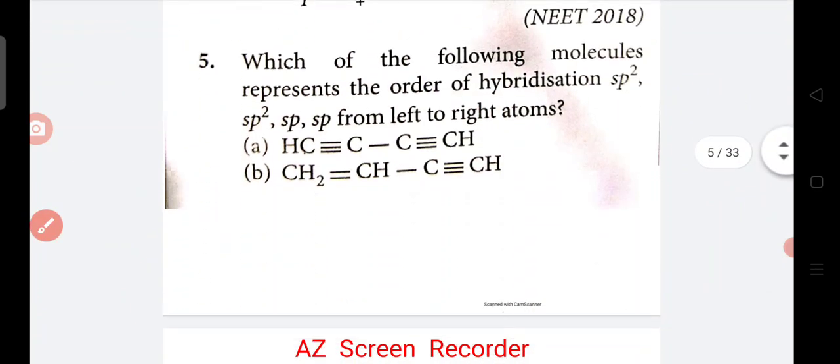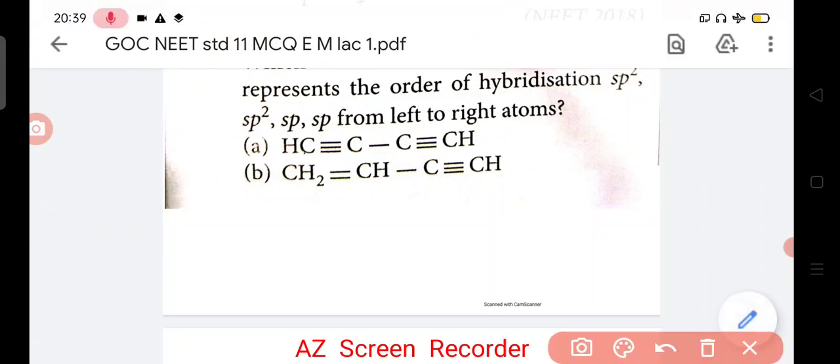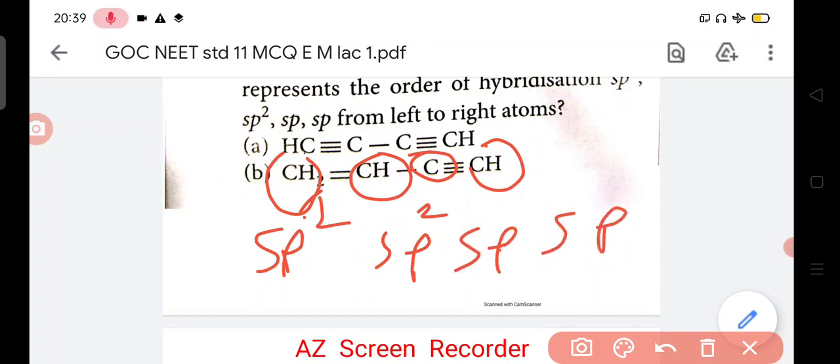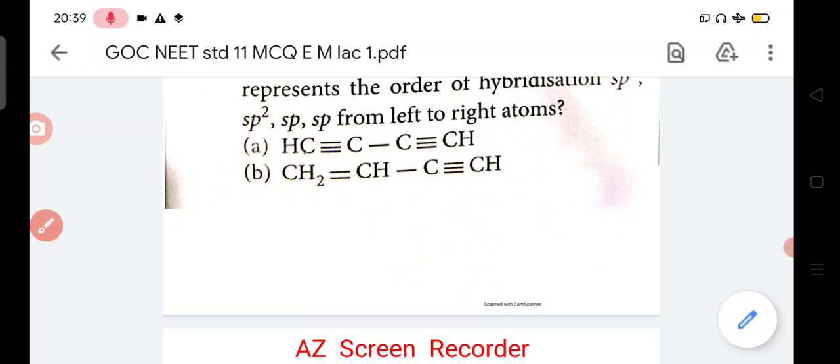Each of the following molecule present the order of hybridization SP2, SP2, SP2, SP, SP from left to right. SP2, SP2, then SP, SP. So here you can see, yeh wala carbon double bond form kar raha hai, SP2. Yeh wala double bond having SP2. Yeh wala triple bond, yeh wala triple bond, SP, SP rahega. Answer is B.